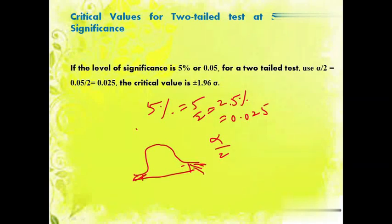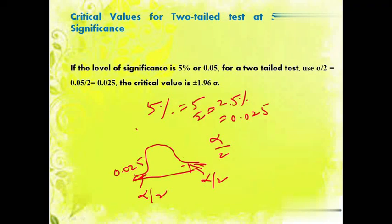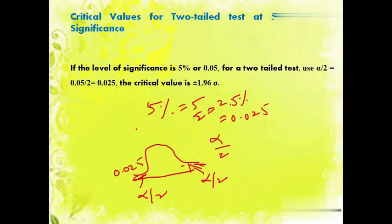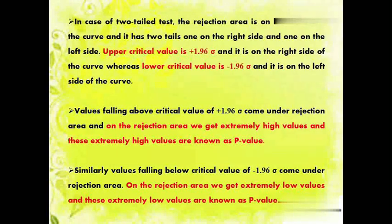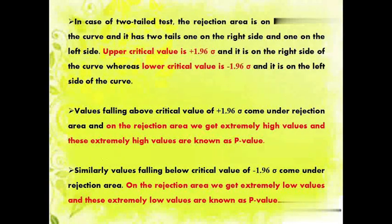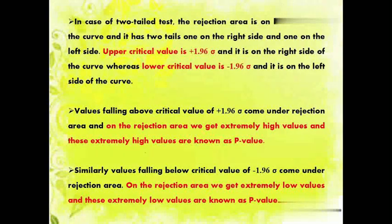Here alpha by two, we take 0.025 on each side. This is the area of rejection on the right side, and this is the area of rejection on the left side. In case of a two-tailed test, the rejection is on both sides of the curve, and it has two tails — one on the right side and one on the left side.